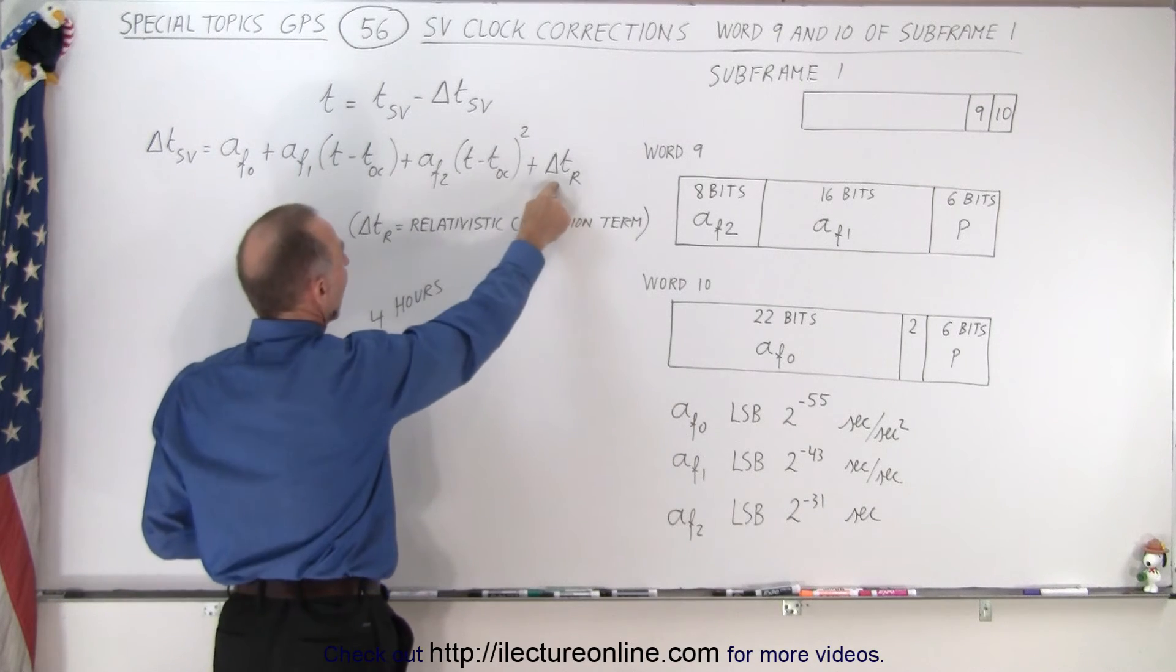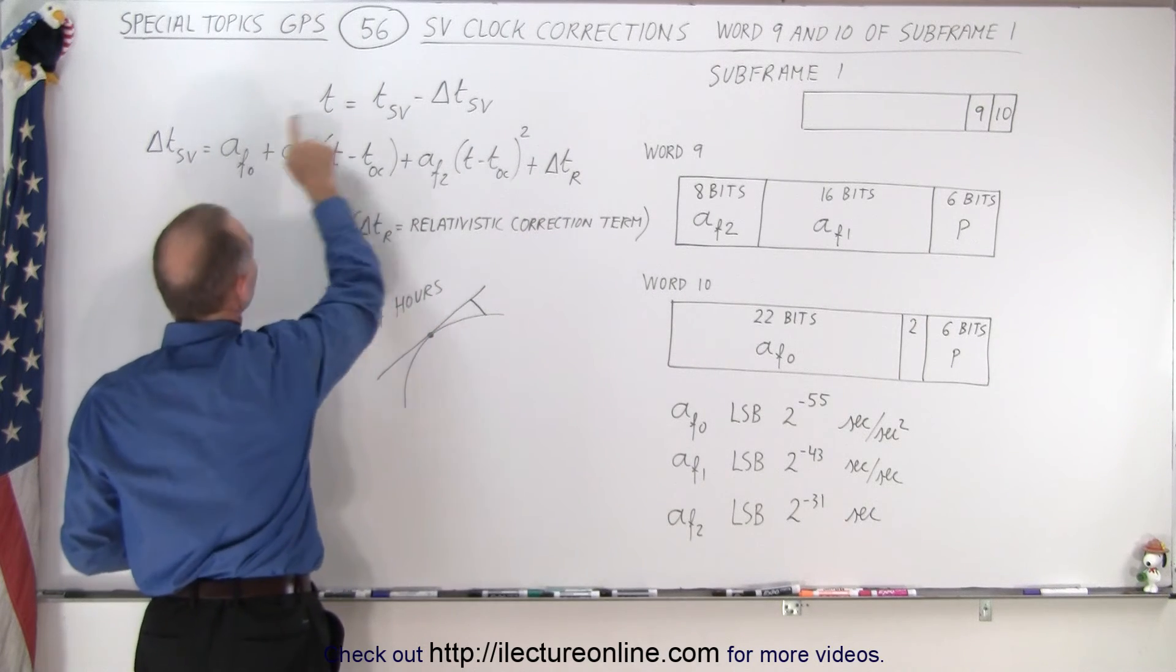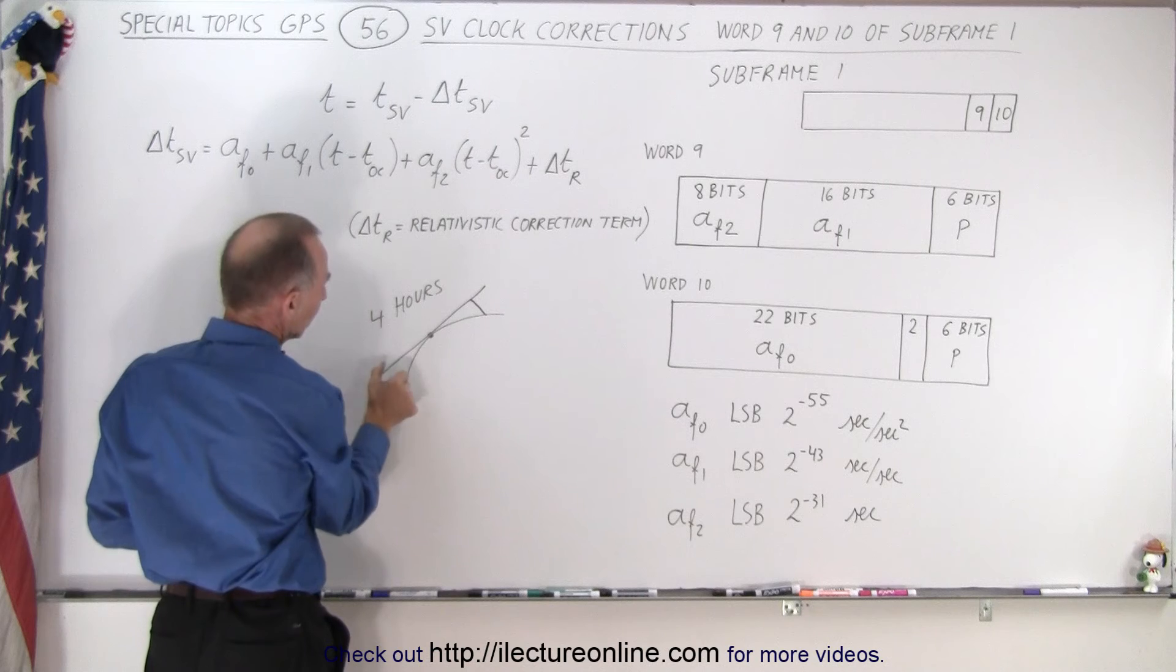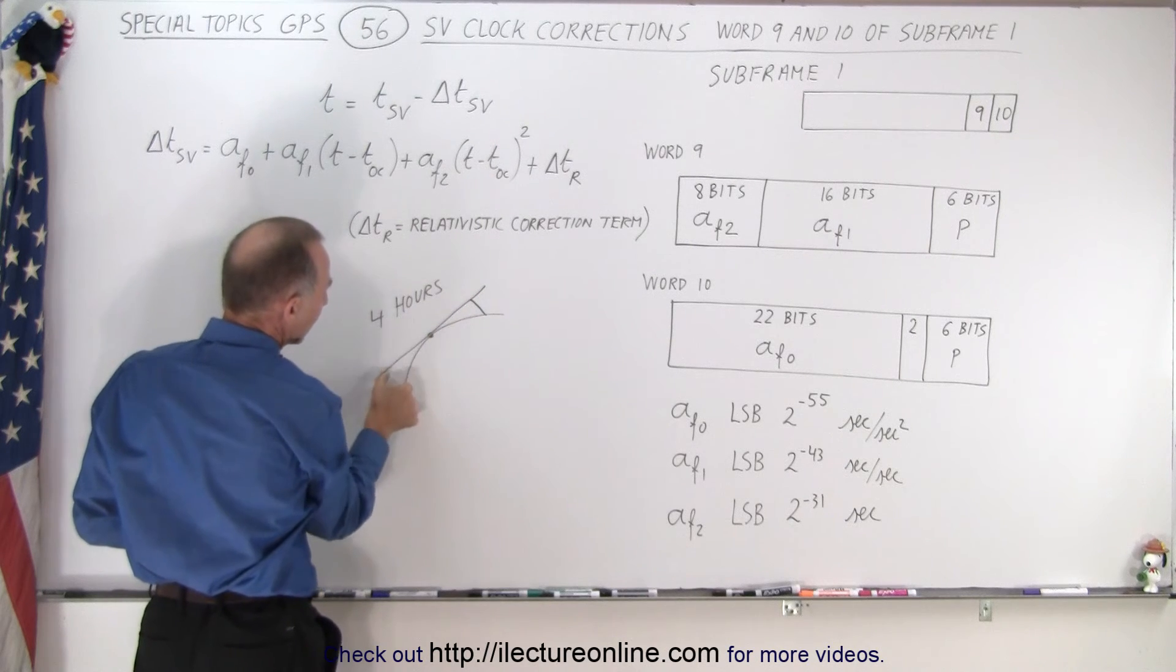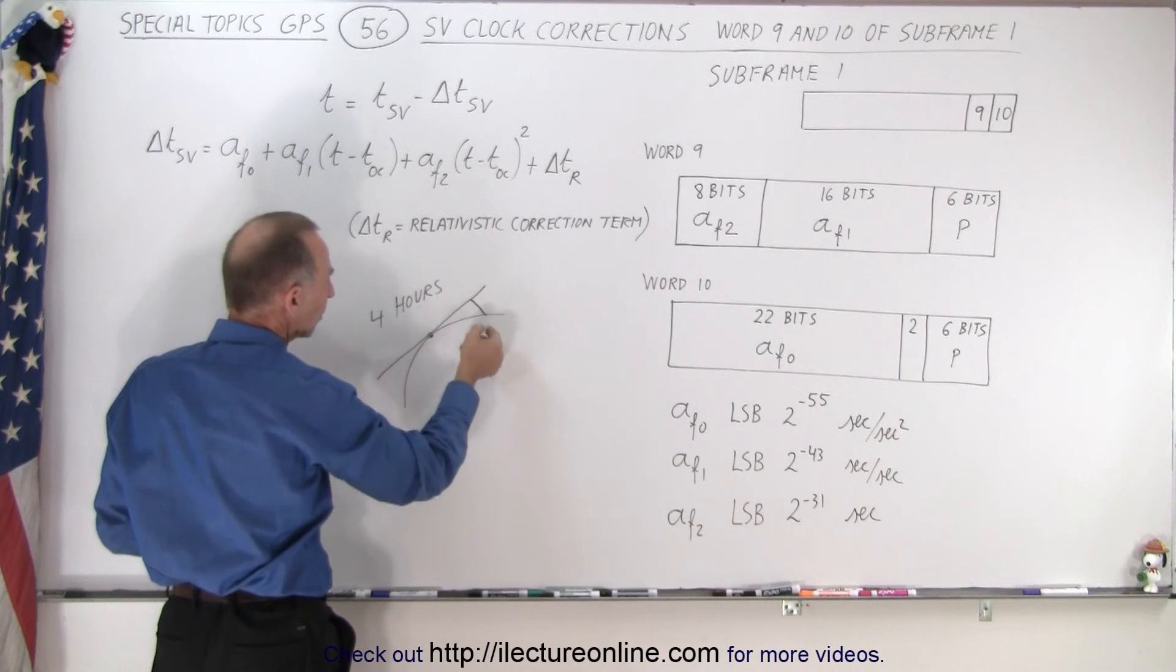And then of course we need to add that to the error where we might be in time for that delta SV. So then we can calculate what the time error will be based upon that calculation that correct equation.